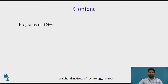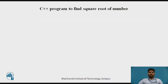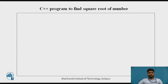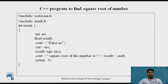The content of this video is the programs on C++. We will see the first program to find the square root of a number. Here we are using two header files — one is Iostream and one is Math. Iostream is used for input-output functions like Cout and Cin, and Math is used as a scientific calculator.